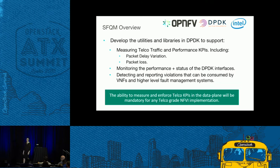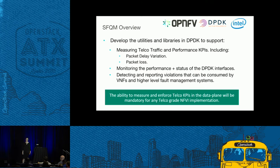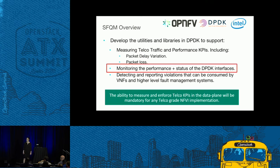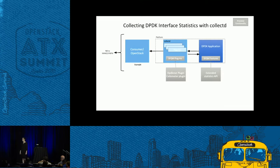I'll give a quick overview of SFQM — the features we've been implementing in DPDK and CollectD, and how you can use those features to pull statistics from DPDK and relay them all the way back to Ceilometer. The ability to measure and enforce Telco KPIs in the data plane will be mandatory for any Telco-grade NFV implementation. SFQM has been developing utilities and libraries in DPDK to support three things: measuring Telco traffic and performance KPIs such as packet delay, packet delay variation, and packet loss; monitoring the performance and status of DPDK interfaces; and detecting and reporting violations for higher-level fault management systems.